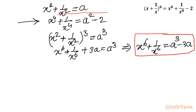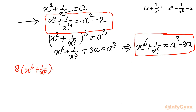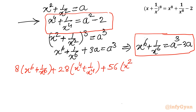Now let me write that equation once. It is: 8 times (x^6 + 1/x^6), plus 28 times (x^4 + 1/x^4), plus 56 times (x^2 + 1/x^2), plus 72 equals 0. This was our equation.